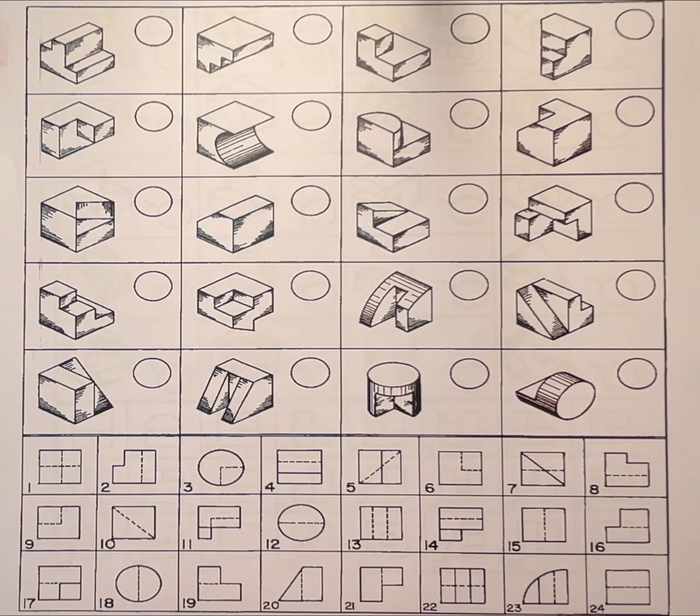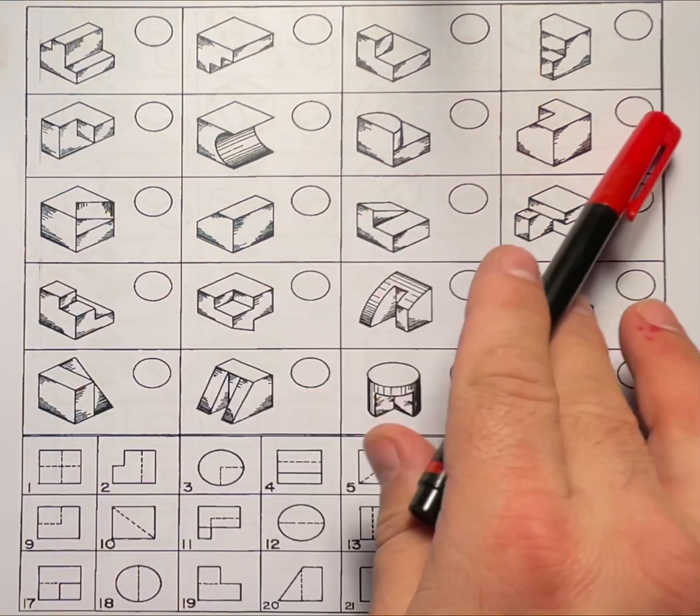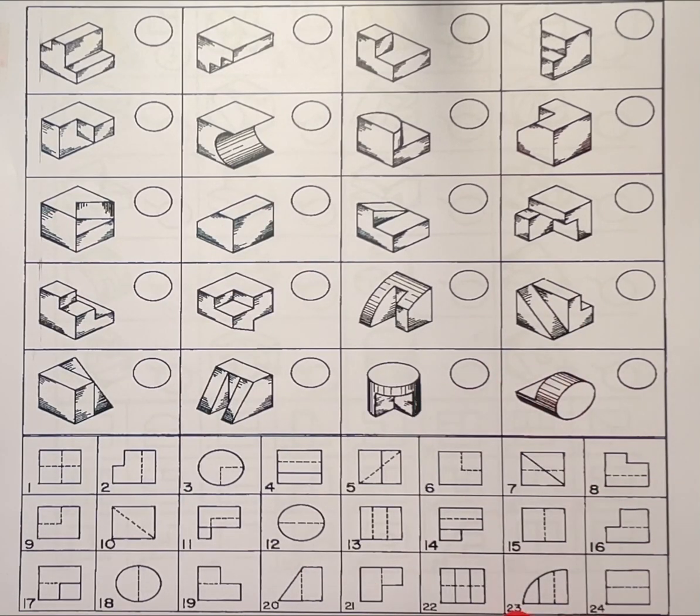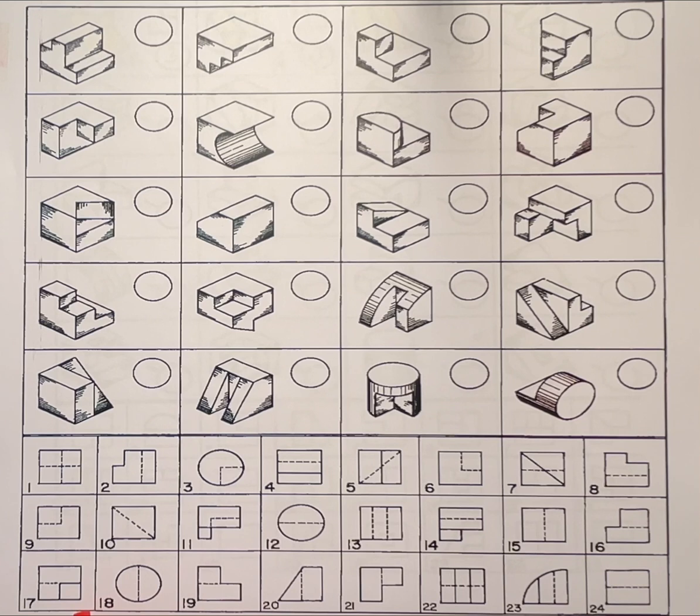In this next demonstration I'm going to be showing you how to locate what view would have a hidden line. This is the hidden line worksheet so we don't know which view the hidden line will be located in, but we do know that there will be a hidden line in each of these objects and the orthographic projection view at the bottom.